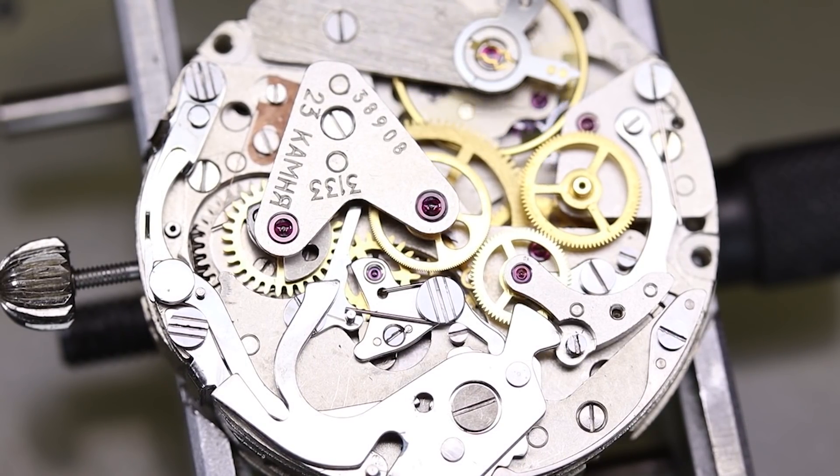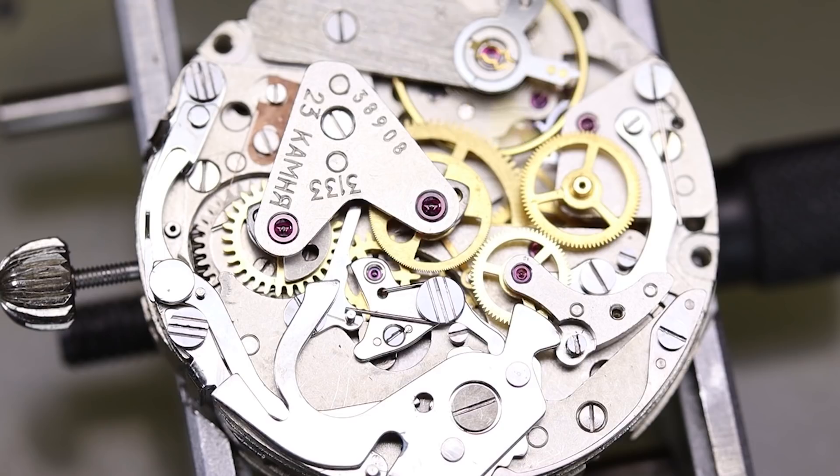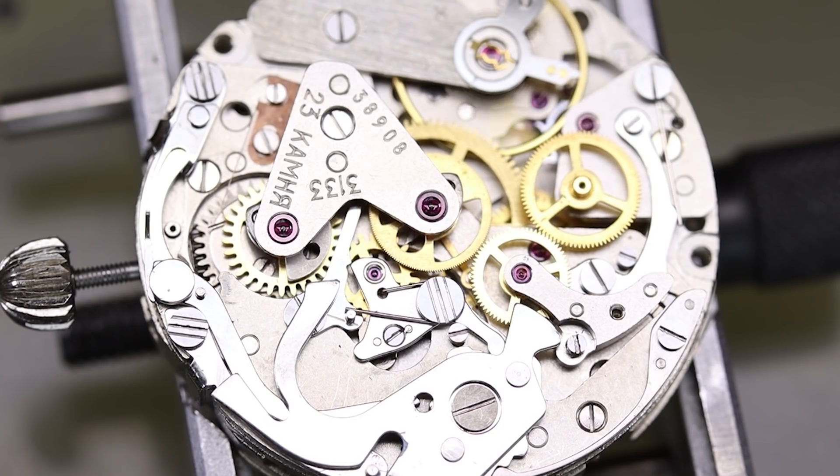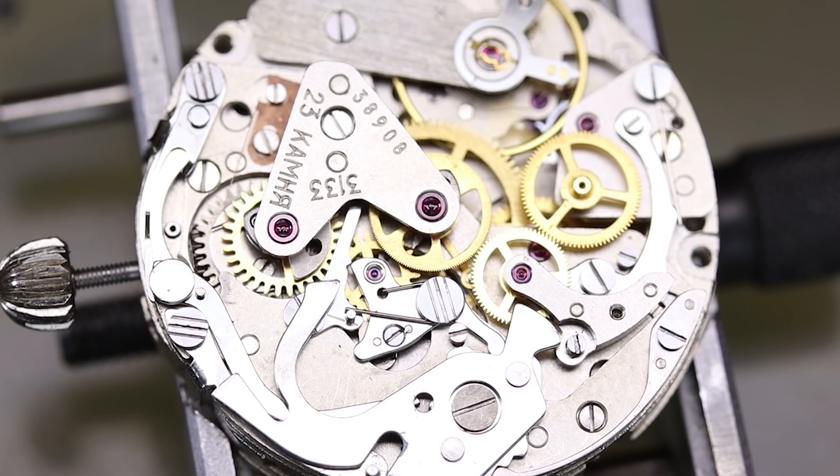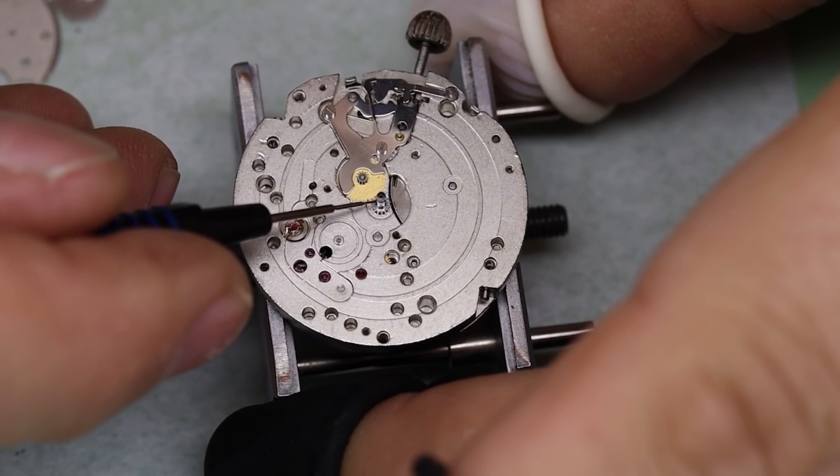Last thing then is the minute wheel jumper. And then we can start the chronograph and see that it runs as it should, and that the minute flips over as it should. Let's speed this up a little bit. And this little finger on the central chronograph wheel flips over the intermediate minute wheel counter, and with it the minute counter wheel. That looks good.